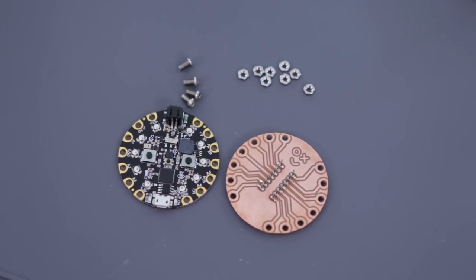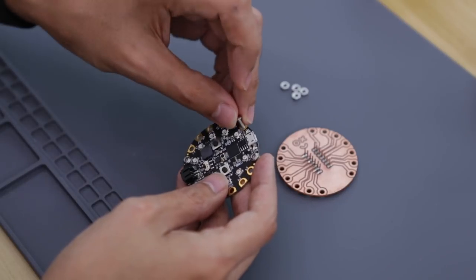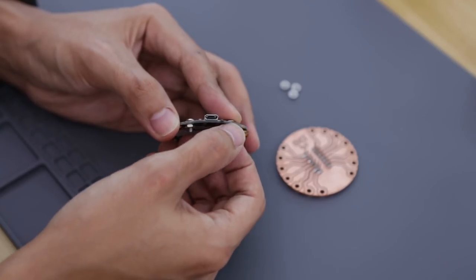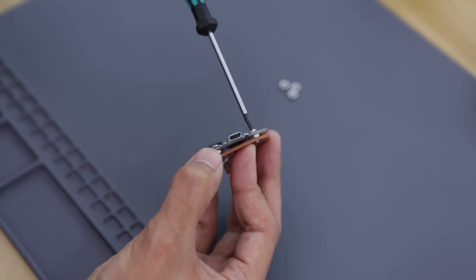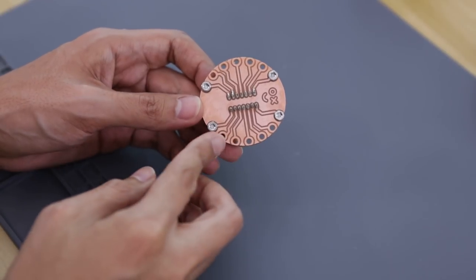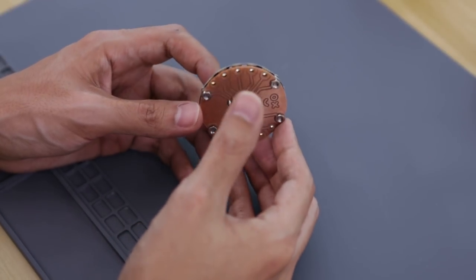I'm using M3 sized machine screws and hex nuts to secure the PCB to the Circuit Playground Express. This is a mechanical way to connect the two boards together and it's still possible to remove if we ever need to. To make more connections you can add as many screws and nuts as you like.